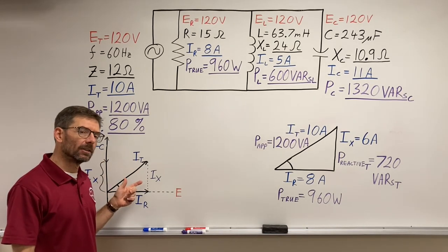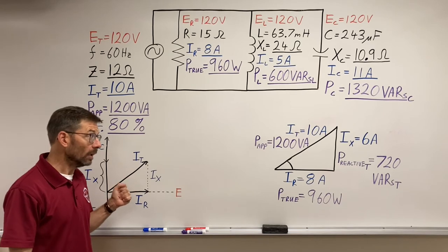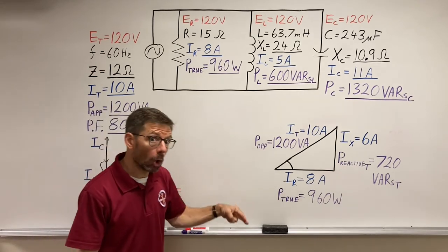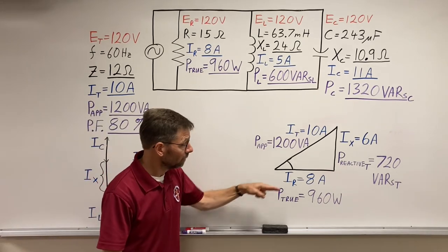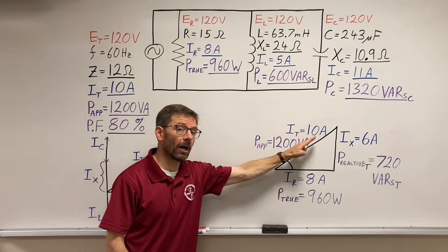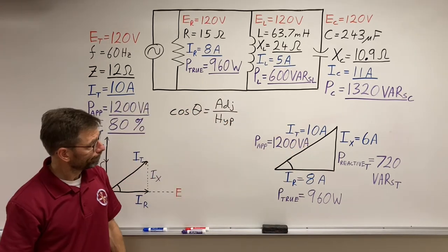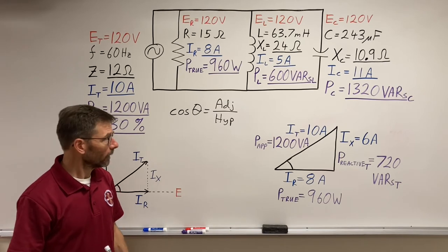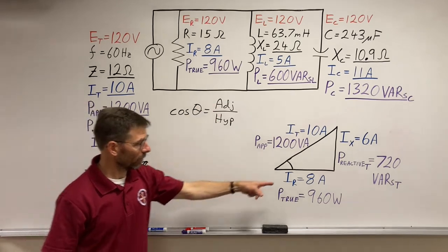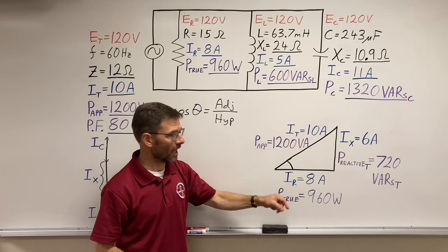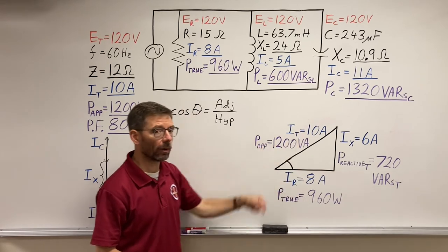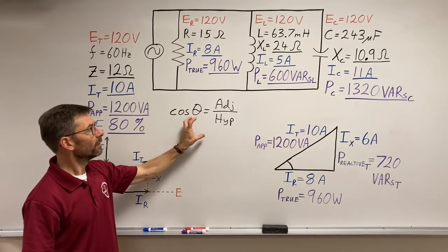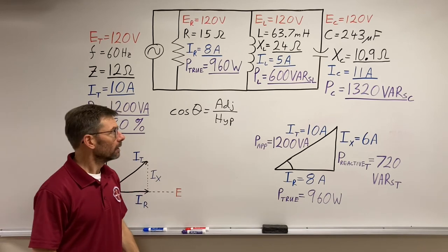Well, we know that cosine of an angle is the adjacent over the hypotenuse. Doesn't do us much good at this point because we've got the ratio already. We know what this side relative to this side is, in amps or in power. So we've got to flip that. We've got to do the arc cosine.